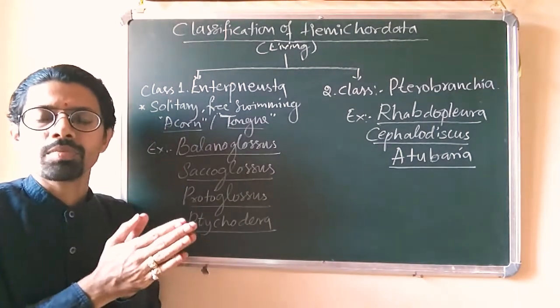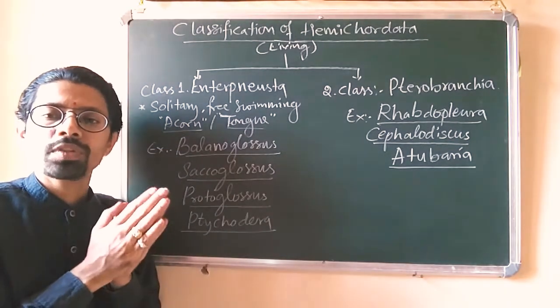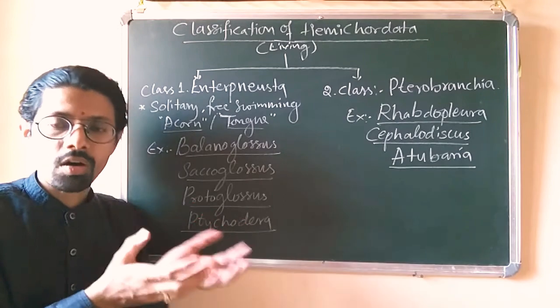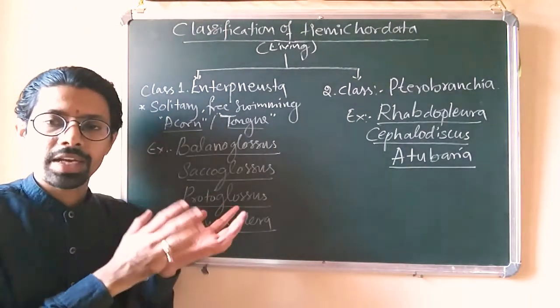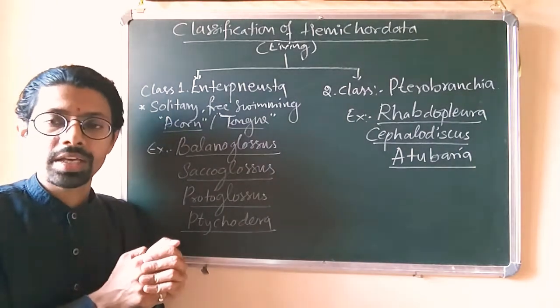Sexes are separate, fertilization is external, and most of them have two types of development methods: either direct or indirect. Those which have direct development, there is nothing to be discussed. Those which have indirect development have a larva.